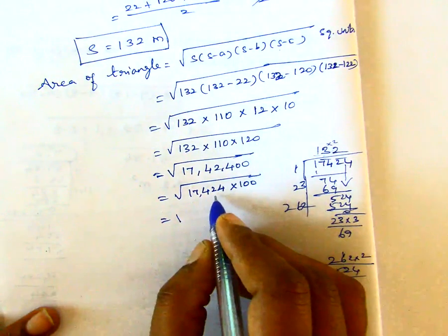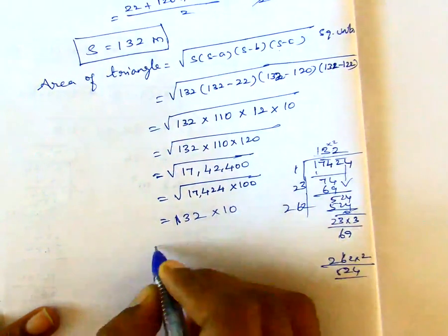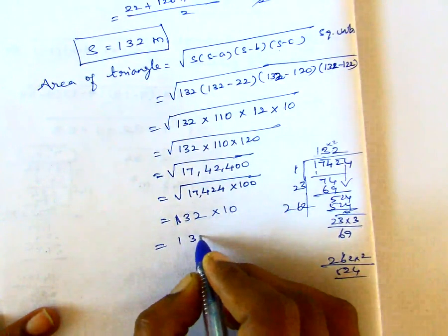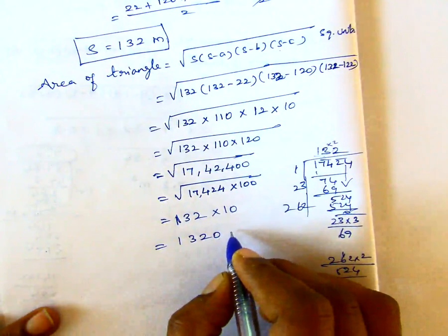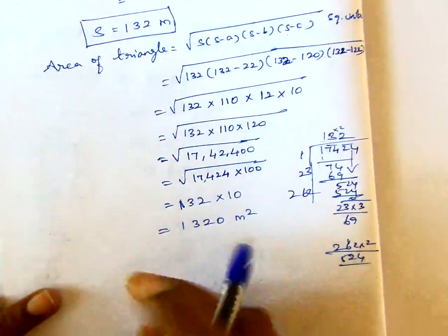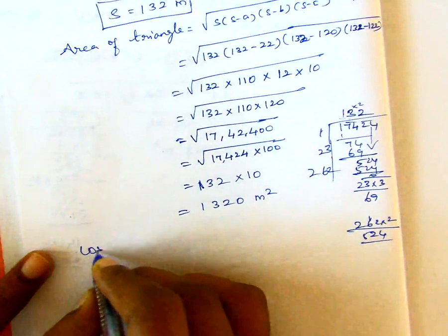Square root of 17,42,400 is 132. So multiply by 10, we get 1320 meter square. Now we have the area of triangle.